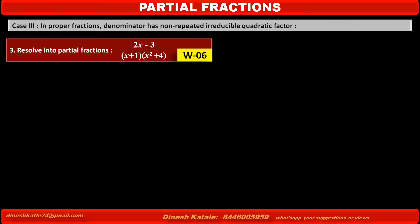Problem 7. Resolve into partial fractions: (2x minus 3) upon (x plus 1) into (x squared plus 4).